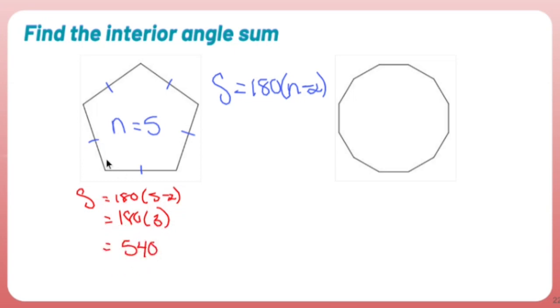So the angles of a pentagon, which is what I have, add up to 540 degrees.